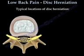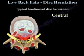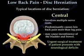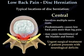There are three typical locations for disc herniation. The first is central, which is a rare condition. It will affect multiple nerve roots. The patient will have back pain more than leg pain, and it may cause incontinence of the bladder and bowel. Urgent treatment is necessary if the patient presents with neurological deficit.